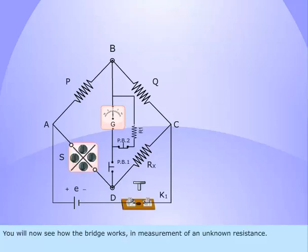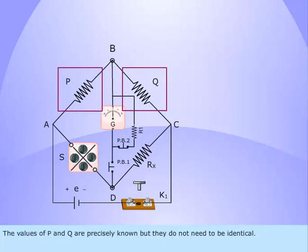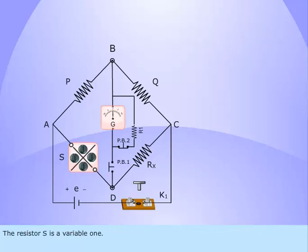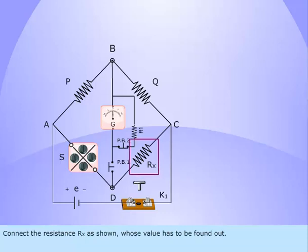You will now see how the bridge works in measurement of an unknown resistance. The values of P and Q are precisely known but they do not need to be identical. The resistance S is a variable one. Connect the resistance Rx as shown, whose value has to be found out.